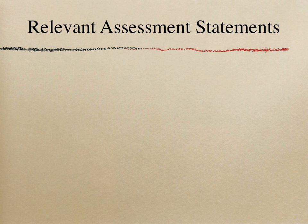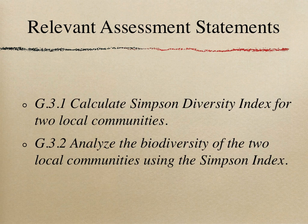Relevant assessment statements could be these two, which can be explained as I go through the sample questions. G.3.1: Calculate Simpson Diversity Index for two local communities. G.3.2: Analyze the biodiversity of the two local communities using the Simpson index.